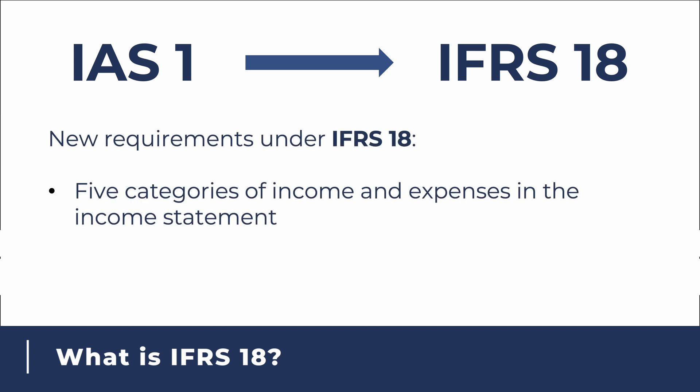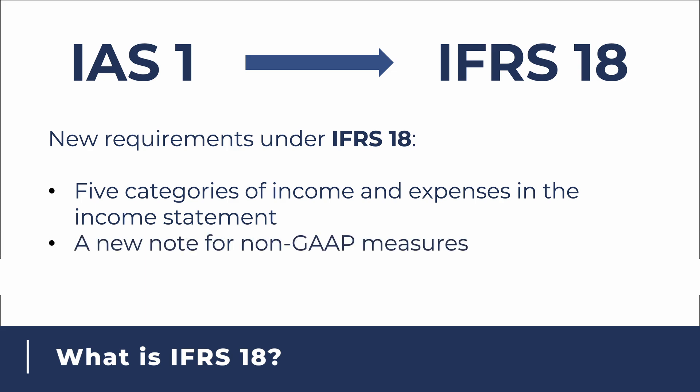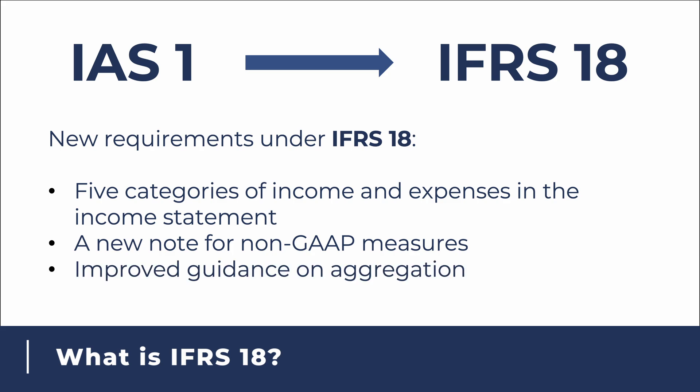First, all income and expenses are now required to be classified into five categories in the income statement, with two new mandatory subtotals. Second, a new note to the financial statements is required showing certain non-GAAP measures, referred to in the standard as management-defined performance measures, or MPMs. Third, there is improved guidance on aggregation of information on the primary financial statements and notes.